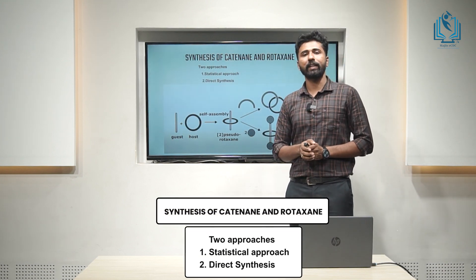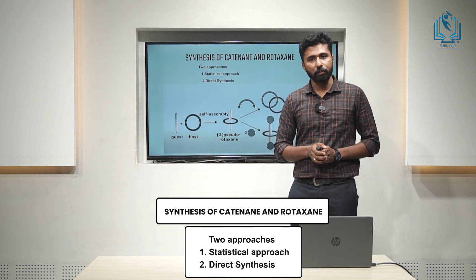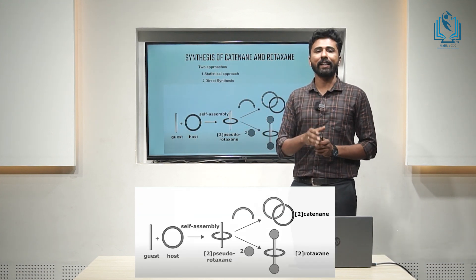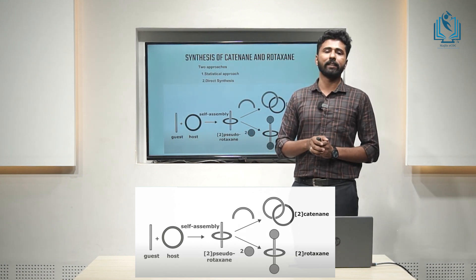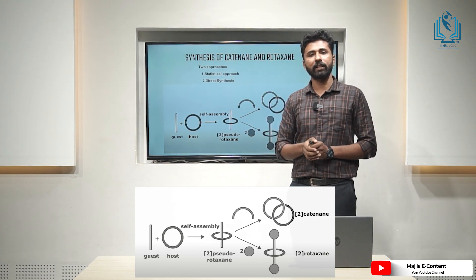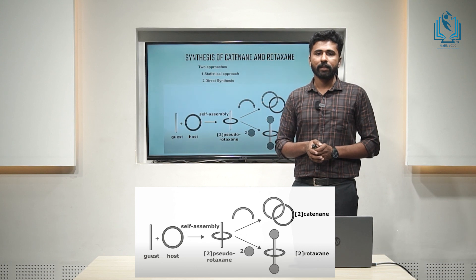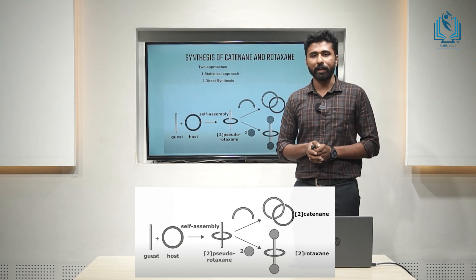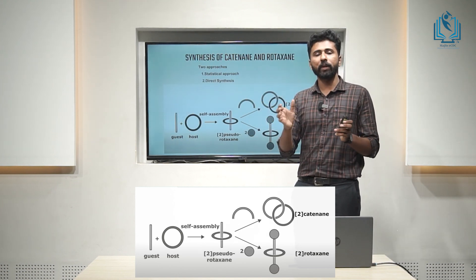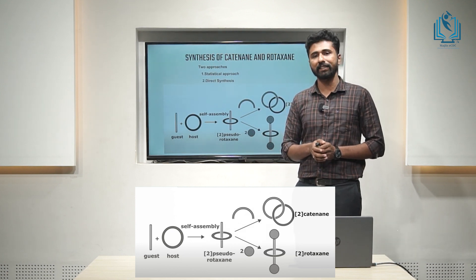Now, we could discuss about the synthesis of catenane and rotaxane. There are two methods: the statistical approach and the direct method. For the direct synthesis, which can be named as self-assembly, we have a guest (the linear molecule) and a host (the macrocyclic ring). By self-assembly, the linear molecule is threaded through the macrocyclic ring, leading to the formation of pseudorotaxane. By cyclization, it leads to the formation of 2-catenane. By bonding two bulky groups at the two ends of the linear chain, it leads to the formation of rotaxane.